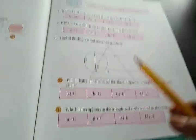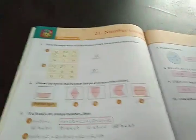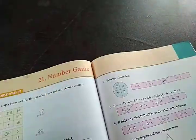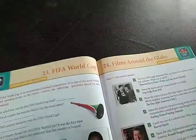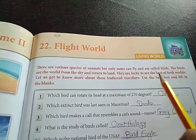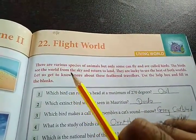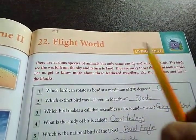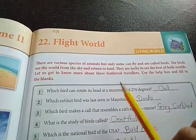Okay students, so these were the total 10 questions of numerical subject. Now we will proceed to our lesson number 22. It's a flight world. This lesson is about the birds. There are various species of animals, but only some can fly and are called birds. The birds see the world from the sky and return to land. They are lucky to see the best of both worlds. Let us get to know more about these feathered travelers.